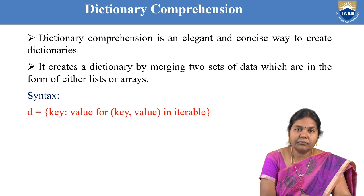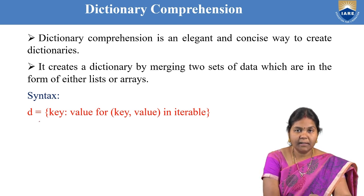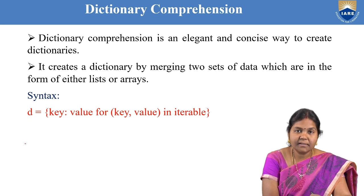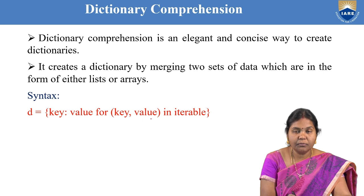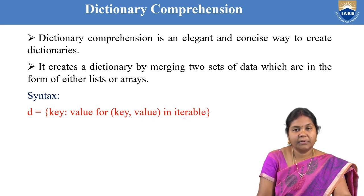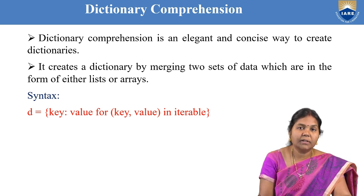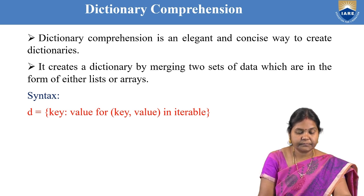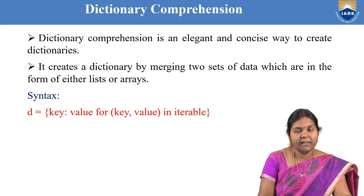You know that a dictionary is a collection of key-value pairs. Whenever you create a dictionary, it should be written like this: D is equal to key colon value, for every key value in iterable. The key-value pairs can be taken from the iterable and you can construct a new dictionary out of it. Let us see some examples of how to apply the Dictionary Comprehension mechanism.